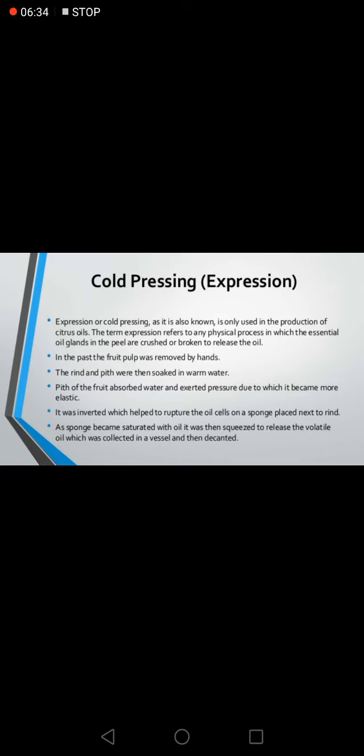Cold pressing or expression is only used in the production of citrus oils. The term expression refers to any physical process in which the essential oil glands in the peel are crushed or broken to release the oil. In the past, the fruit pulp was removed by hand; the rind and pith were then soaked in warm water. The pith absorbed water and exerted pressure, becoming more elastic. It was inverted to rupture the oil cells onto a sponge placed next to the rind. As the sponge became saturated with oil, it was squeezed to release the volatile oil, which was collected in a vessel.